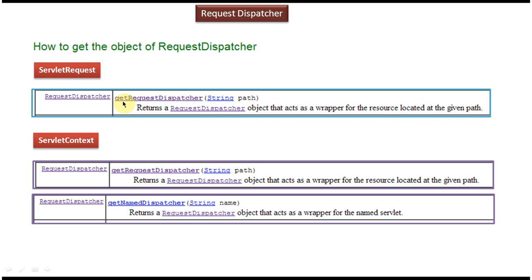We can get the RequestDispatcher object by calling the getRequestDispatcher method of the ServletRequest interface, the getRequestDispatcher method of the ServletContext interface, or the getNamedDispatcher method of the ServletContext interface. Using these three methods we can get the RequestDispatcher object. For getRequestDispatcher you pass the path of the resource, and for getNamedDispatcher you pass the name of the servlet. The ServletRequest and ServletContext objects are created by the servlet container, so once we have those objects we can call these methods to get the RequestDispatcher object.